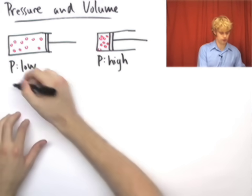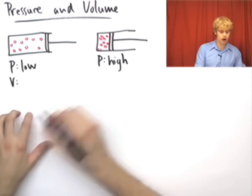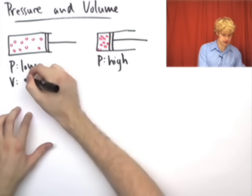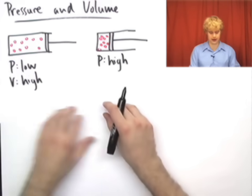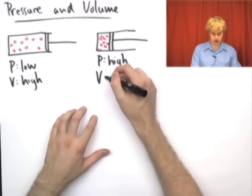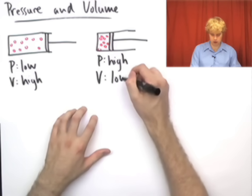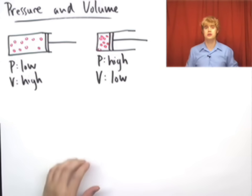Let's look at what happens to the volume during this change. Volume right here, relatively speaking, is pretty high. These gas particles have a good amount of room to move around in. On the other hand, the volume over here is pretty low. We've squeezed them into a much smaller space.